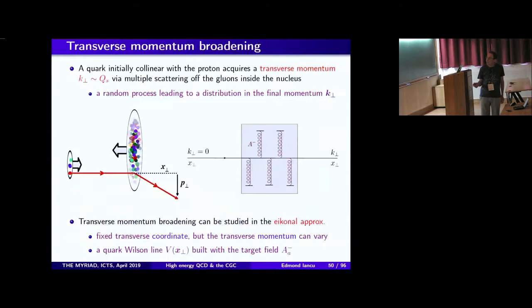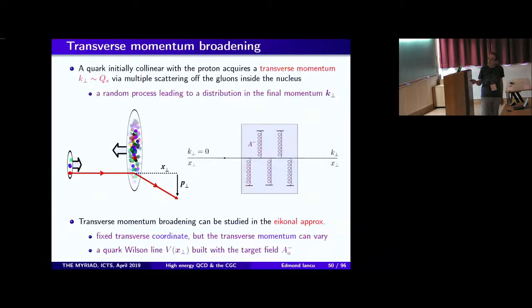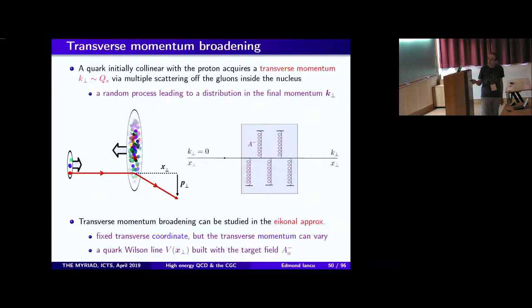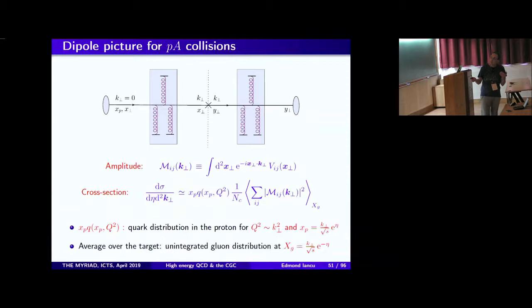Returning to the momentum broadening problem. I want to compute the quark transverse momentum broadening using the eikonal approximation and everything derived before. I have one quark scattering — that's the amplitude. To compute the cross section for producing a quark with a given k-perp, I take the product of the amplitude and its complex conjugate. In the final state I have the same k-perp in both the amplitude and its conjugate, and this k-perp is obtained from the Wilson line in coordinate representation by Fourier transform.